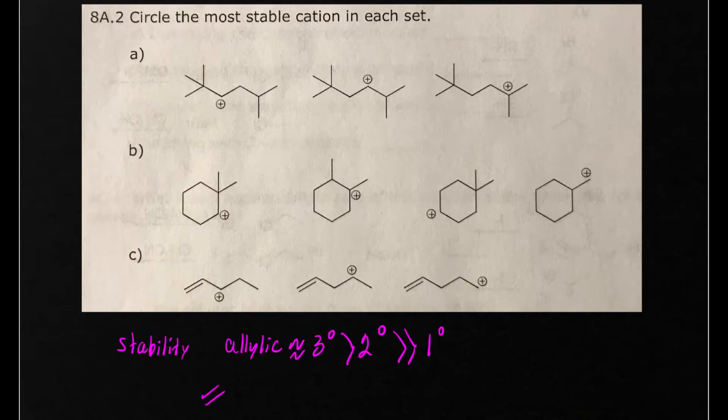An allylic carbocation looks like this where the positive charge is next to the double bond. A tertiary carbocation is one in which the positive charge is on the tertiary carbon. A secondary carbocation looks like this and a primary carbocation looks like this.